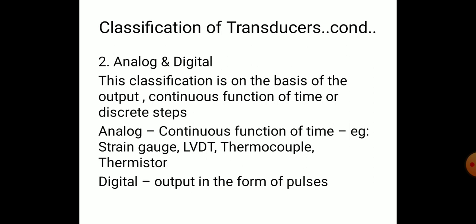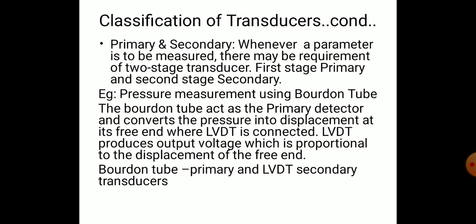In analog and digital classification: if the output is a continuous function of time it is called analog; if the output is in discrete steps or pulses it is called digital. Then there is primary and secondary classification.